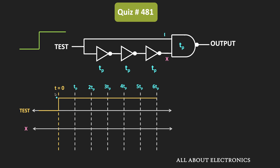Before time t=0, when the test input is 0, the x input will be 1. We are assuming that since a long time this test signal has been low, meaning the inputs and output of the NAND gate are already stabilized. So before t=0, x is equal to 1. At t=0, the change in the test signal will appear at the x input after three gate delays. So up to three gate delays, x remains high, and then after that, it becomes low.